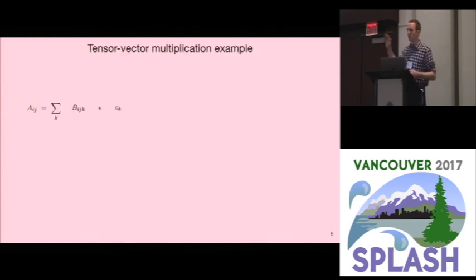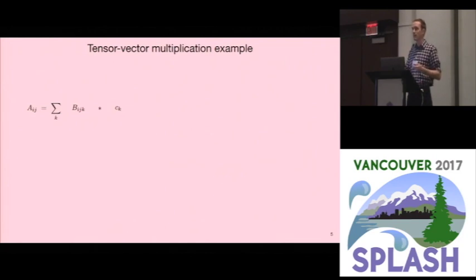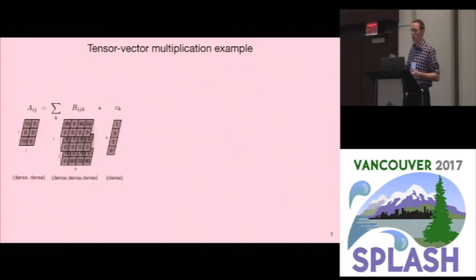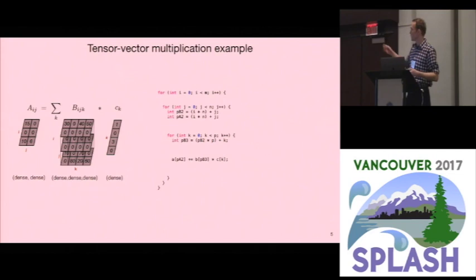Consider this tensor-vector multiplication expression: you multiply a three-tensor B by a vector C to get the matrix A. That means for each i, j, you sum over all the k's. If the matrix, the tensor, and the vector are all dense, then you write this simple dense code: you loop over all the i's, all the j's, all the k's, and you compute in the middle.